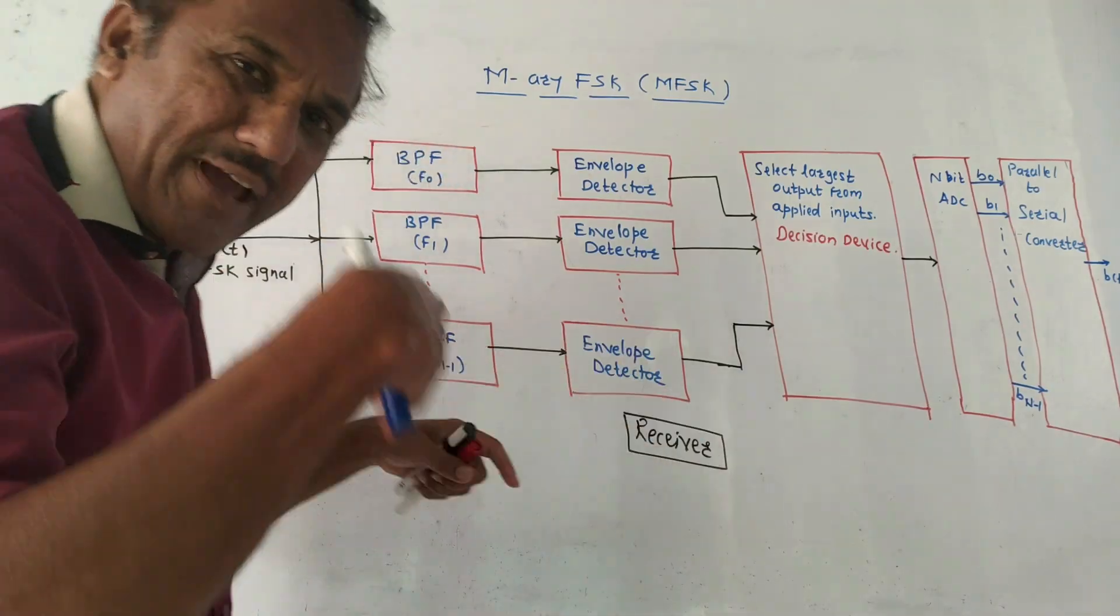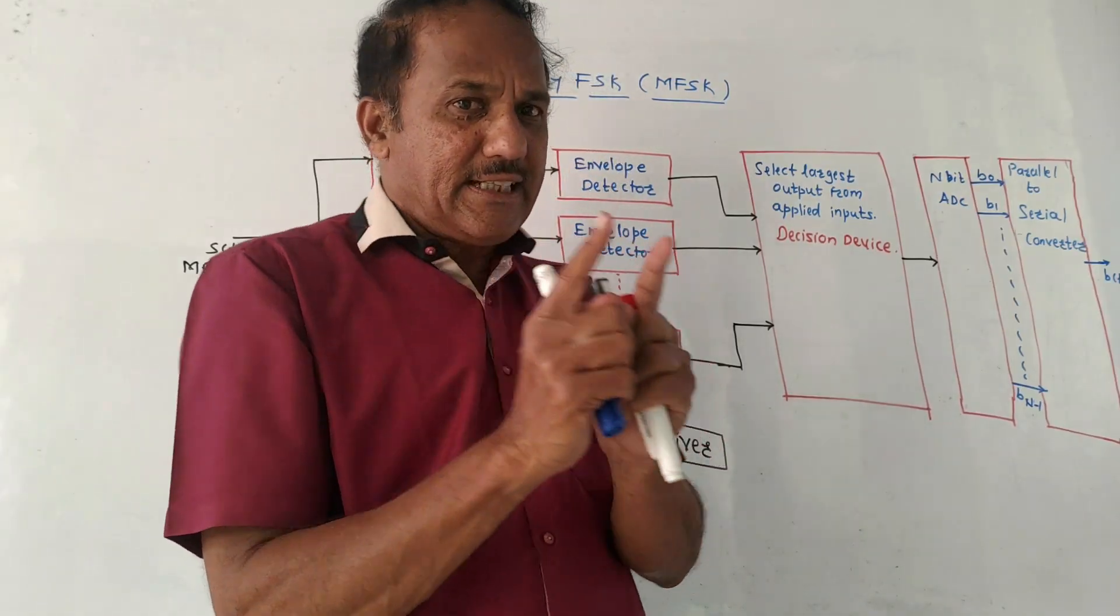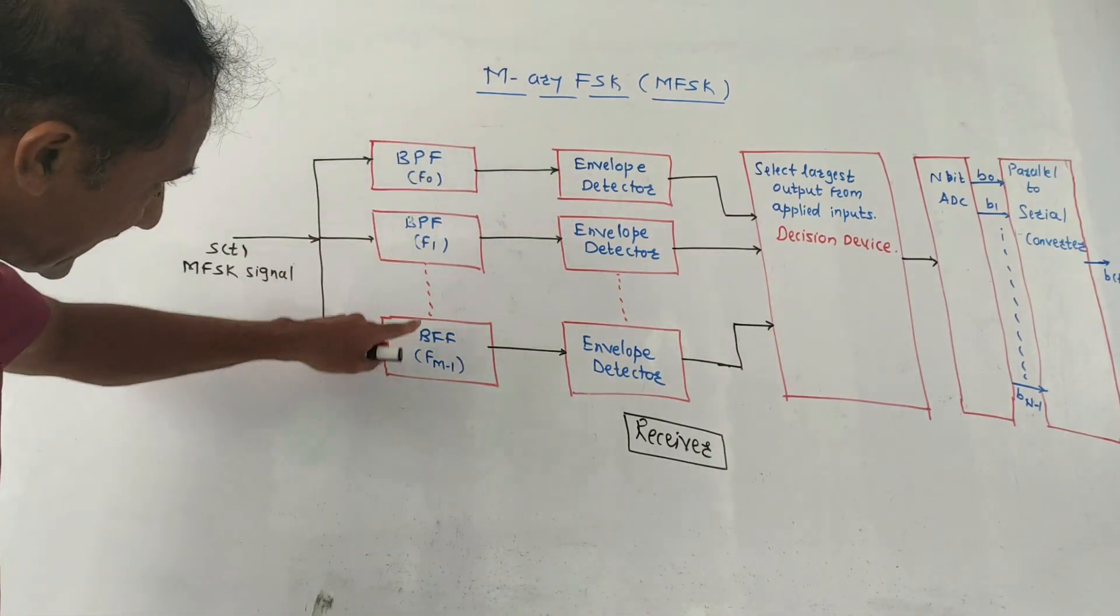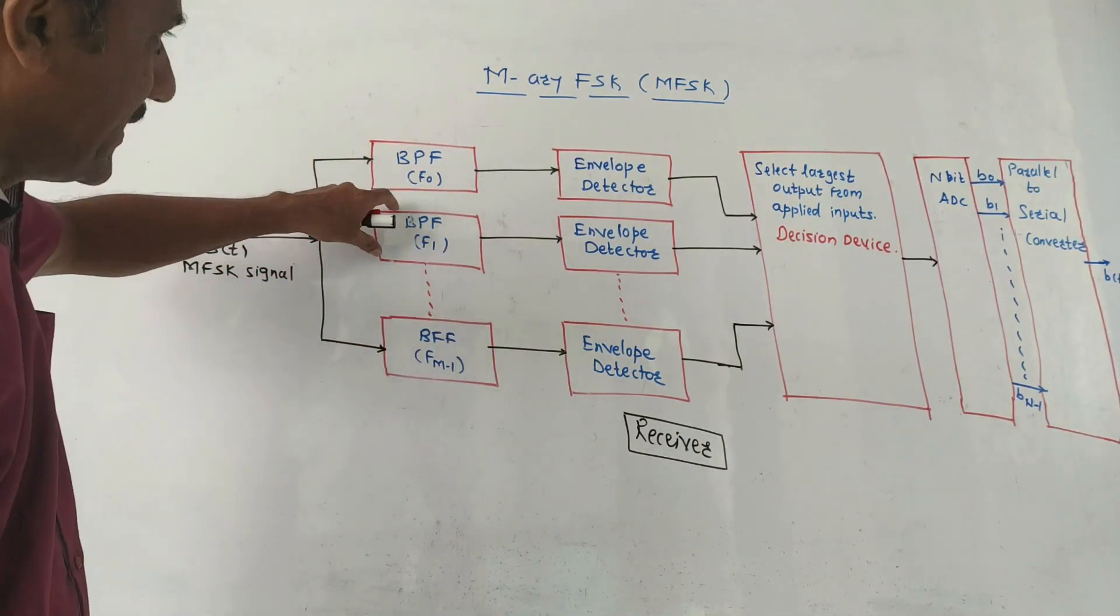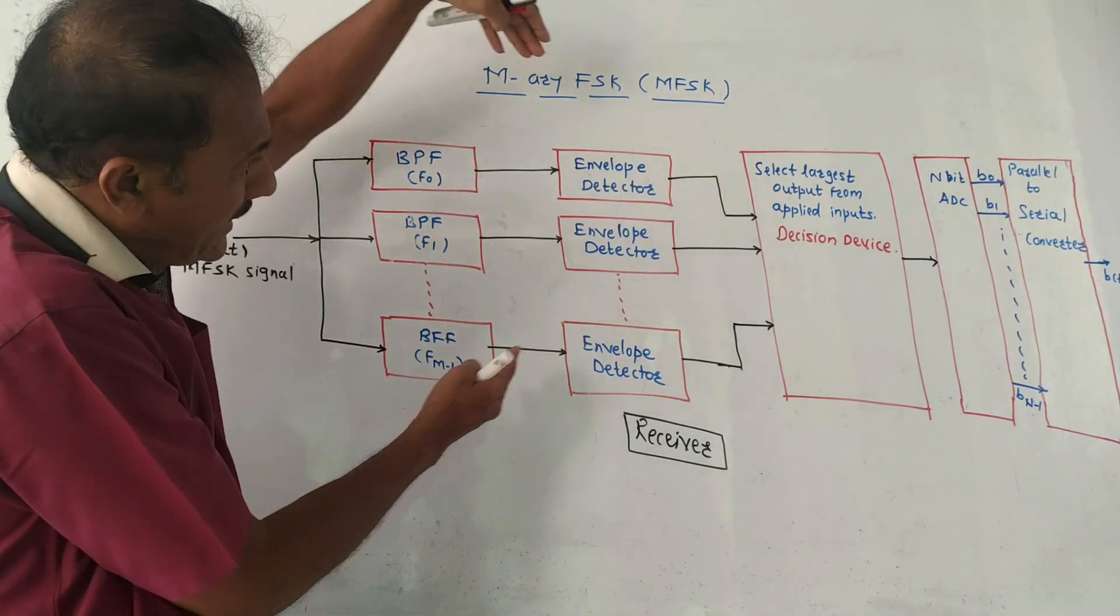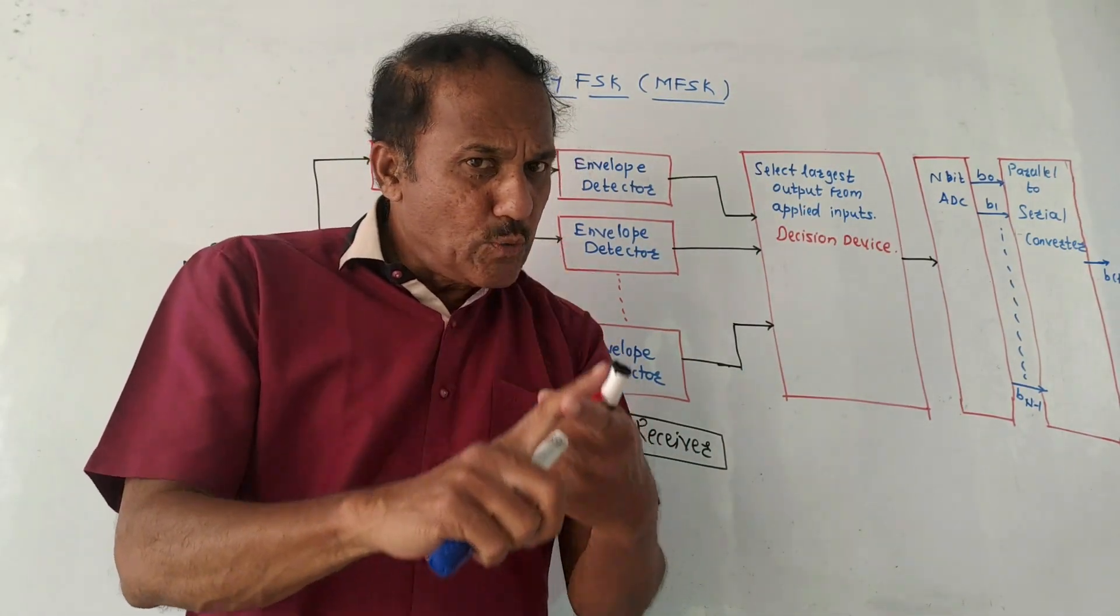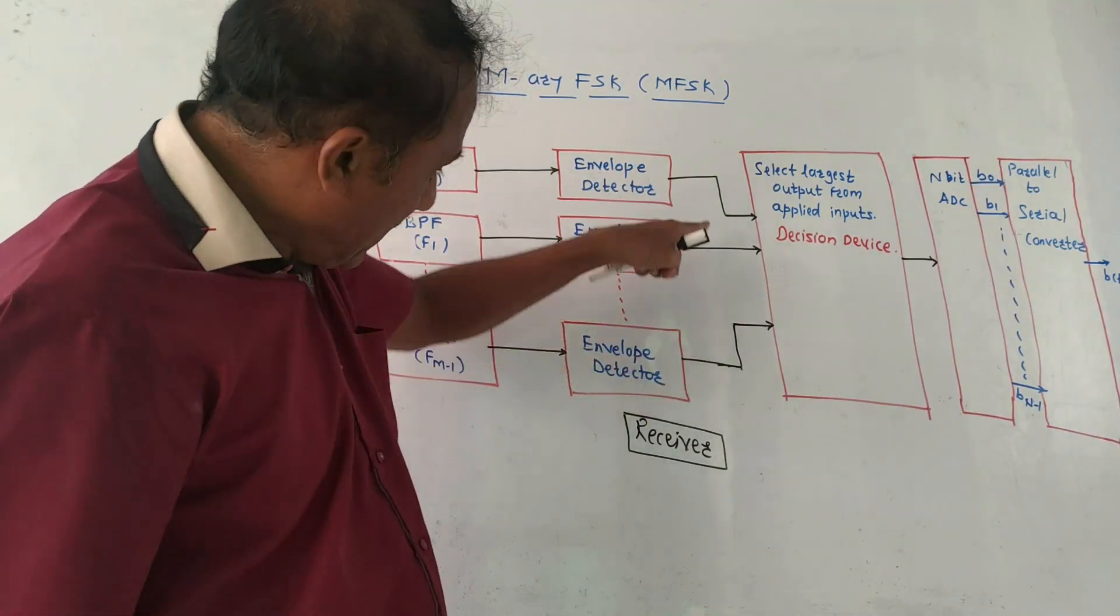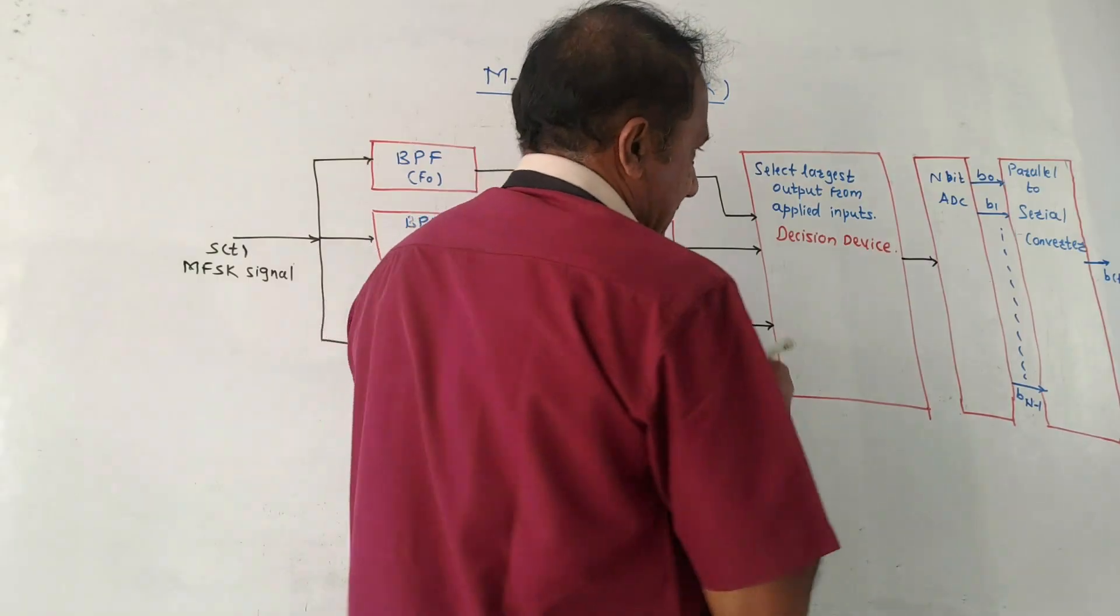What this means is that depending on the incoming frequency signal, a particular band pass filter will be activated. At any time, only one frequency is selected. This is the function of the band pass filters. Depending on the incoming frequency, whichever center frequency matches, that particular band pass filter will be in active condition. The output of the band pass filter is applied to a number of envelope detectors. As many band pass filters we use, that many envelope detectors we have to implement. The function of the envelope detector is to produce the output voltage corresponding to the incoming signal.